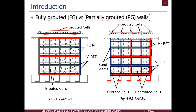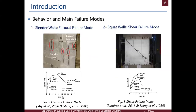In this study, we are working on partially grouted walls. Moving to the behavior and failure modes of reinforced masonry walls, similar to reinforced concrete, we have two main failure modes: the flexural failure mode, expected in slender walls, and the shear failure mode, expected in squat walls.